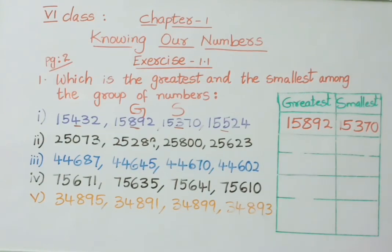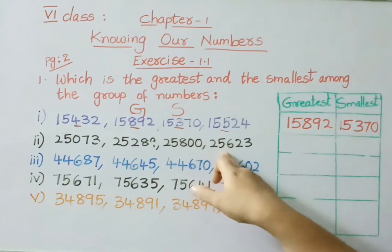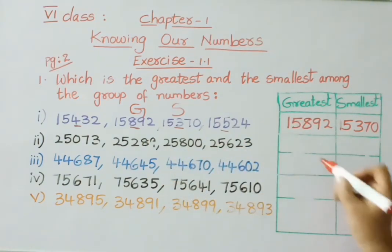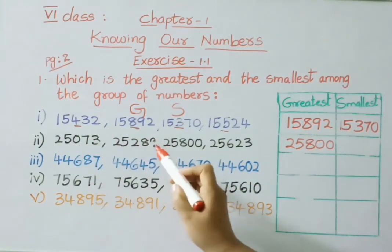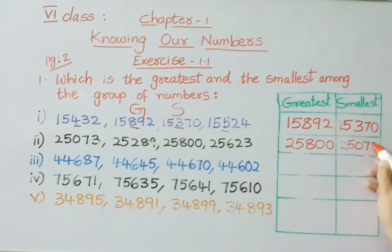See the next example: 25,073, 25,289, 25,800, and 25,623. Among them, which is the greatest and smallest? All are given as 25,000, so let us see the hundreds place: 0, 200, 800, and 600. The greatest is 800, so 25,800 is the greatest number. Checking remaining numbers — 73, 289, 623 — the smallest is 73, therefore 25,073 is the smallest number.